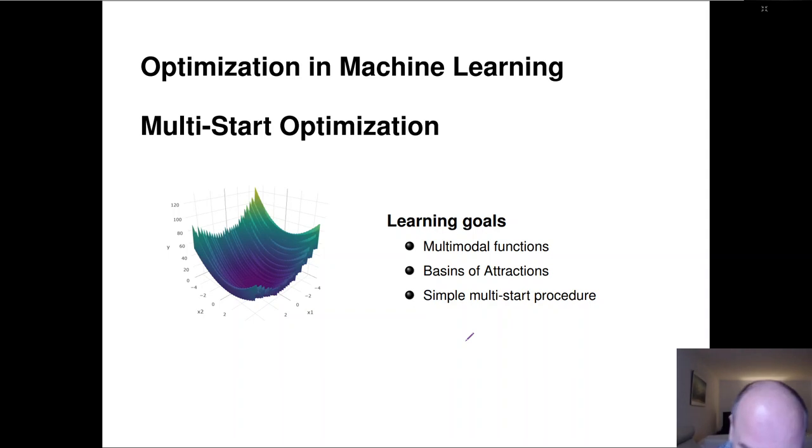So we'll talk a bit about multimodal functions, give a definition of what we mean by an area or basin of attraction, and then have a look at this multi-start procedure basically on an example. Like I said, this is really easy to explain, but it's a worthwhile trick that you should have in your belt of tools.